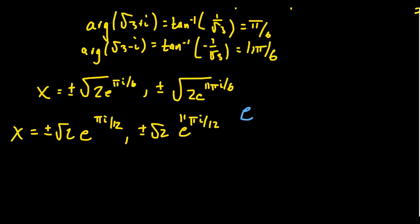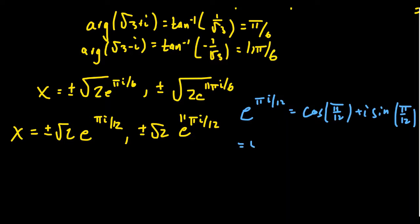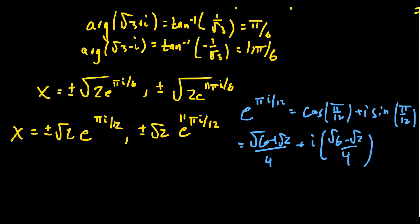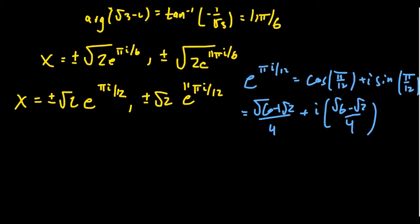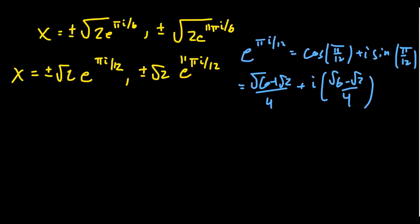So what do we do with pi i over 12? We compute e to the pi i over 12 as cosine of pi over 12 plus i sine of pi over 12. Pi over 12 is the same as 15 degrees — that gives us root 6 plus root 2 over 4, and then i times root 6 minus root 2 over 4. Notice that 11 pi over 12 is the angle in the second quadrant that references to pi over 12, a.k.a. 15 degrees.